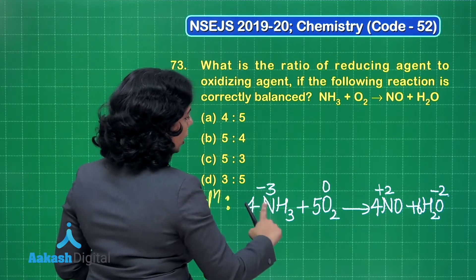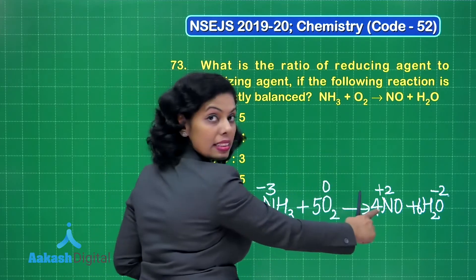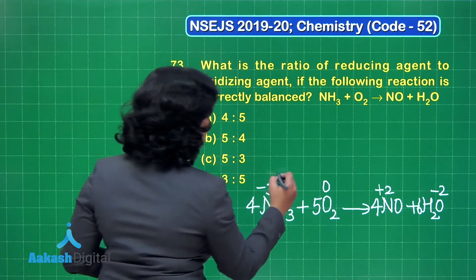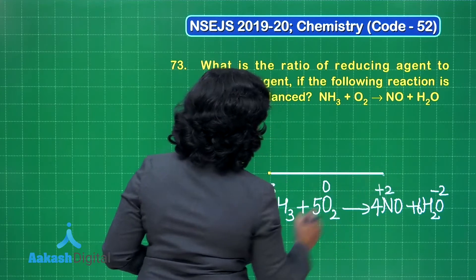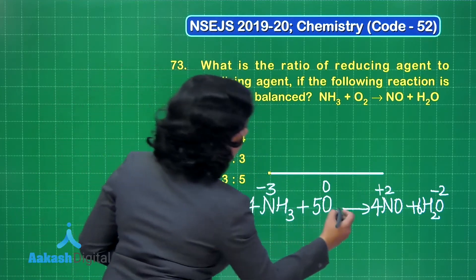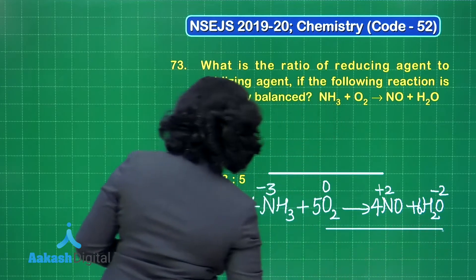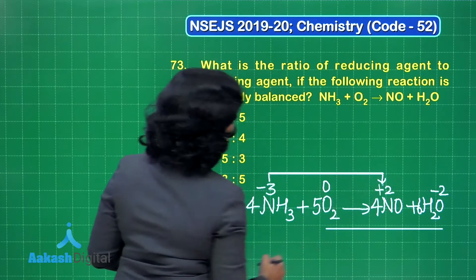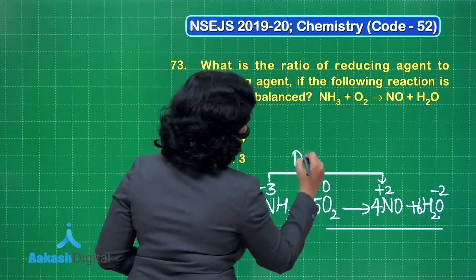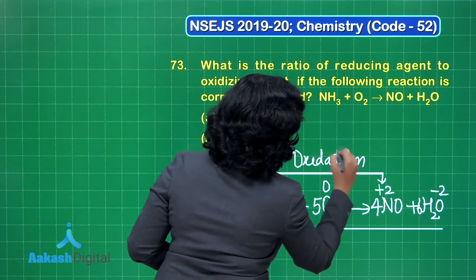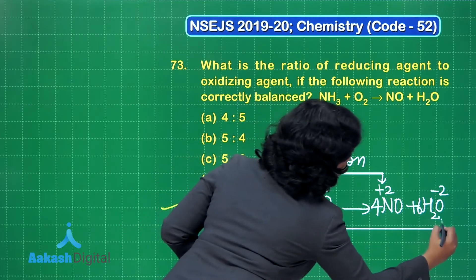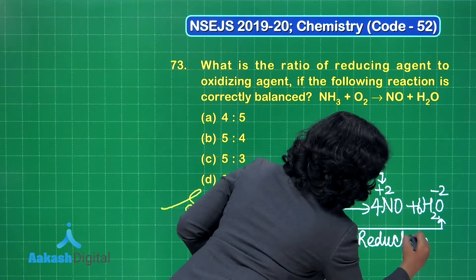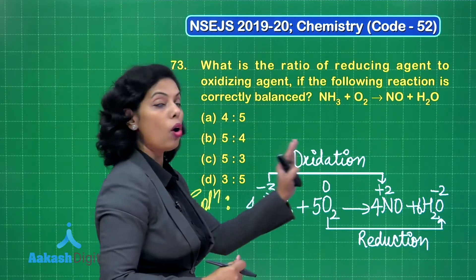The oxidation number of nitrogen is increasing from −3 to +2, so nitrogen is getting oxidized — this is the process of oxidation. The oxidation number of oxygen decreases from 0 to −2, so that is a decrease in oxidation number, which means the process of reduction is taking place for oxygen.